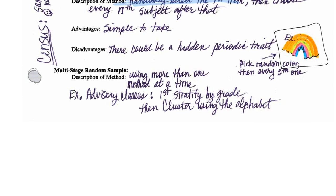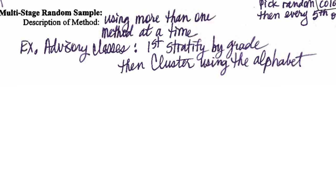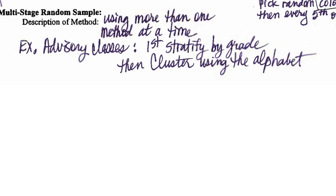All right. The last one, well, not the last one, but close to the last one, multi-stage. Multi-stage just means there's more than one of these methods used. Here's a good school example. And that's our advisory classes. Because you know what they do? They print out the 10th grade list. And then they print out the 11th grade list. And they print out the 12th grade list. So the lists are homogeneous groups. That's stratifying. They're all the same. So first, they stratified by grade. And then they took one of those strata, and they did something to that. They clustered it with the alphabet. So they had it all lined as alphabetical lists. And then they did the next 25, and then those go to so-and-so's advisory.